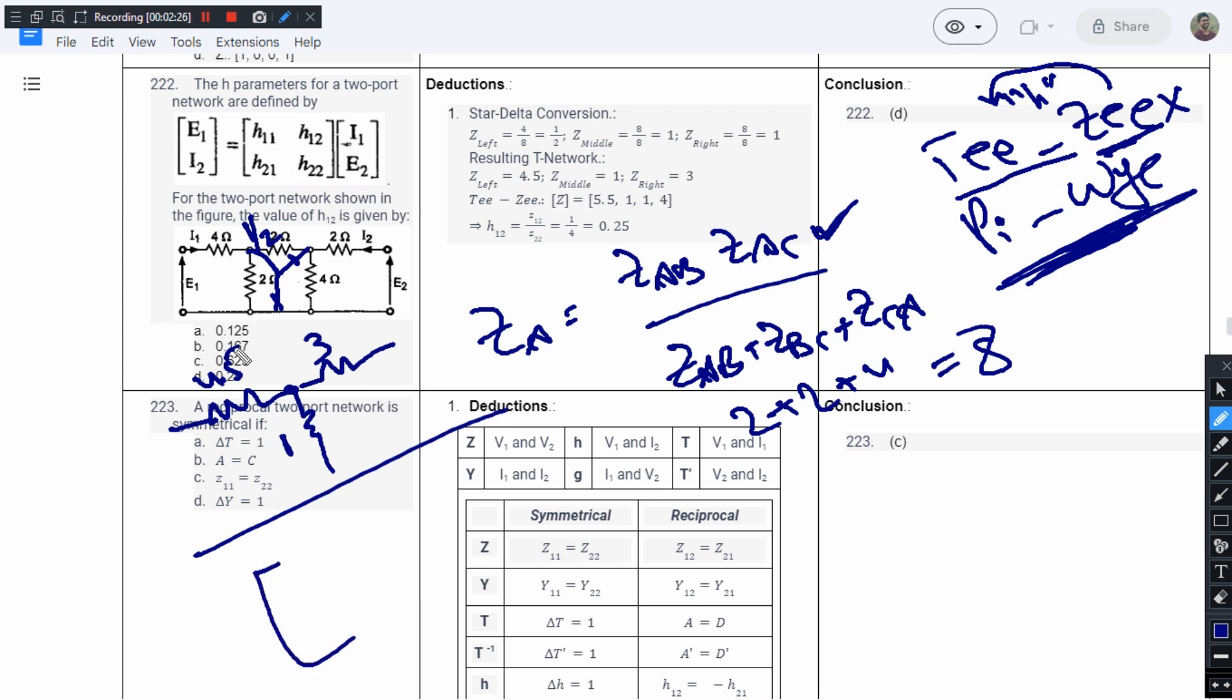From here we can construct the Z matrix. This is loop 1, this is loop 2. So the first element is going to be 5.5, 4 plus 1, 5.5.